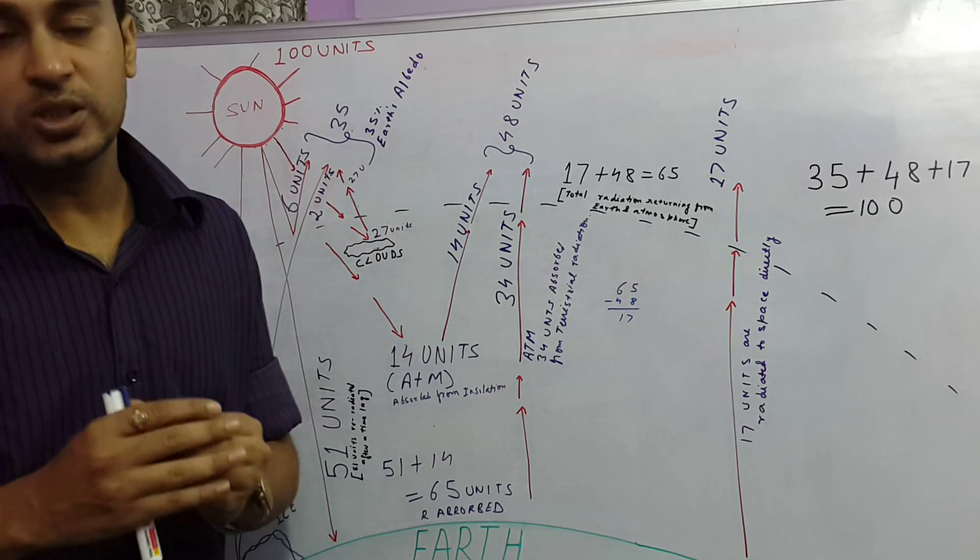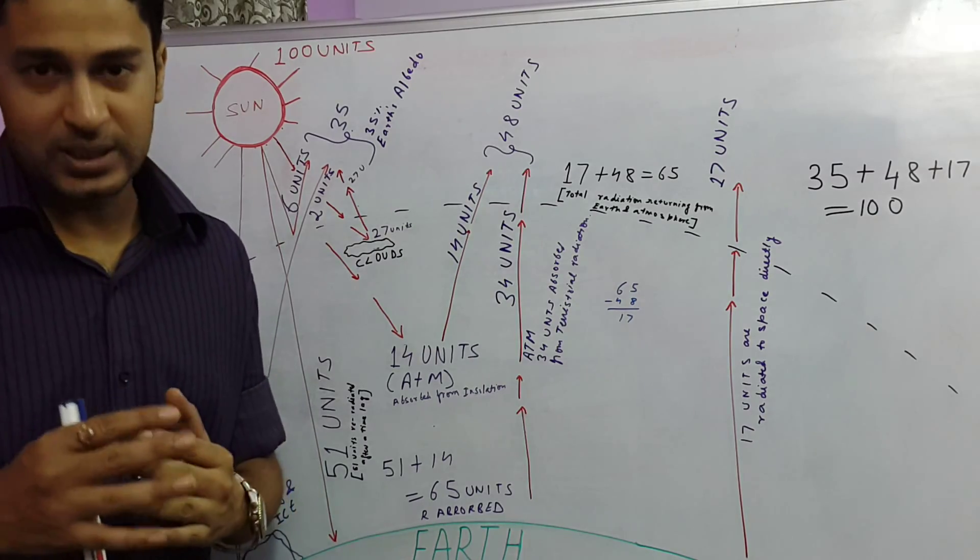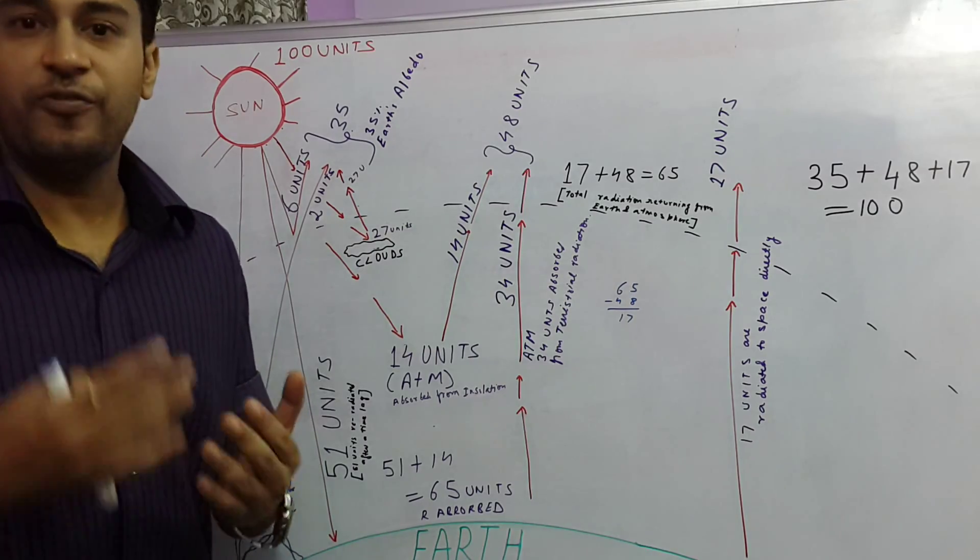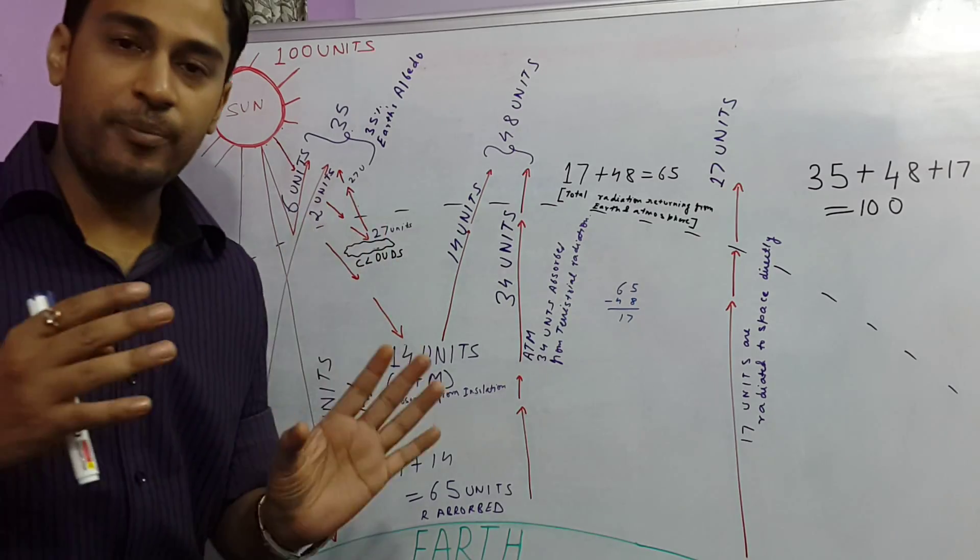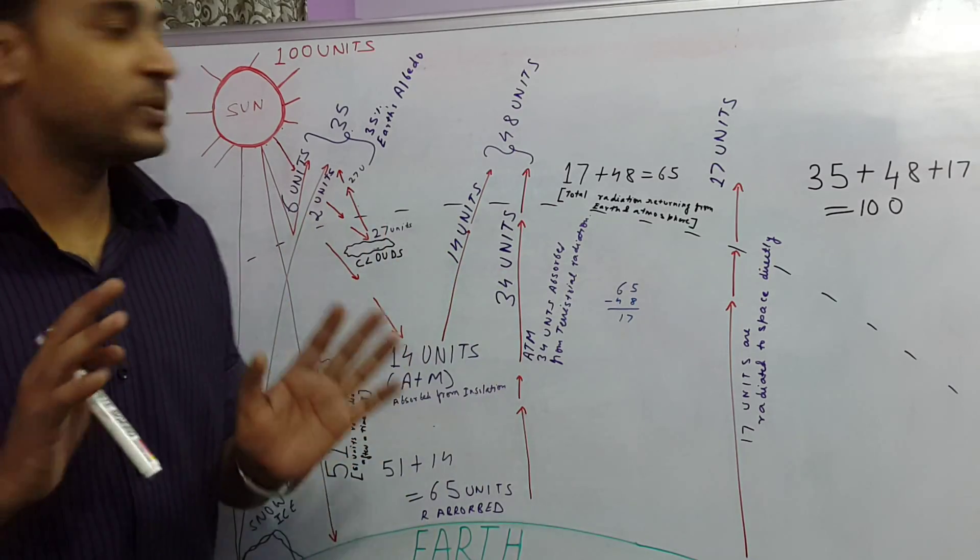Now this 35 units is also called the albedo of the earth. Albedo basically means the reflectivity of a surface. So please remember earth's albedo is about 35%.